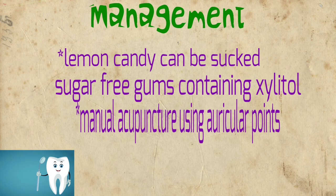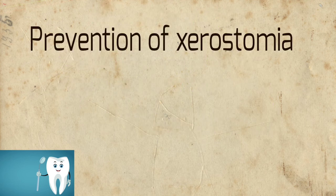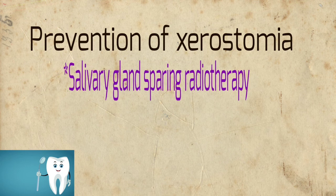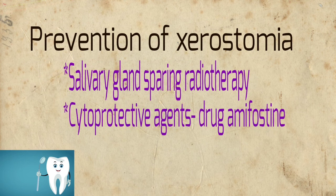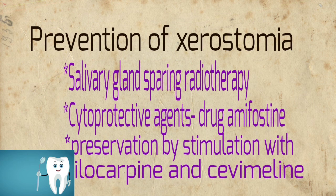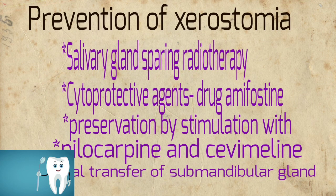Sugar-free gums containing xylitol can be used, and manual acupuncture using auricular points can be done. Prevention of xerostomia includes salivary gland-sparing radiotherapy, the cytoprotective drug amifostine, and preservation by stimulation with pilocarpine and cevimeline. Surgical transfer of the submandibular gland can also be done to prevent xerostomia.